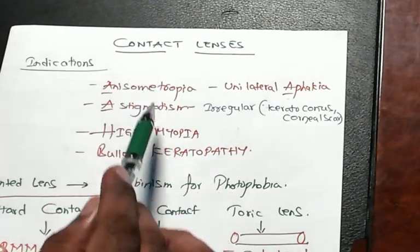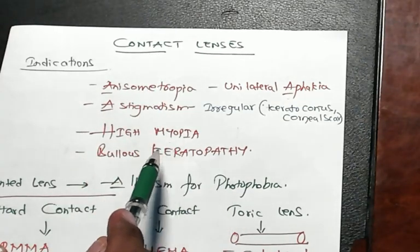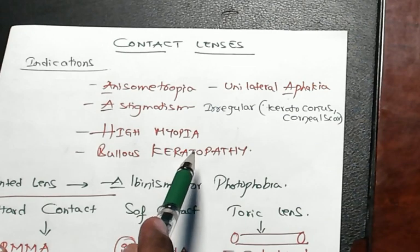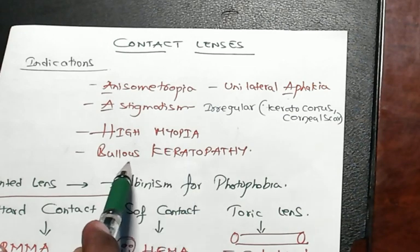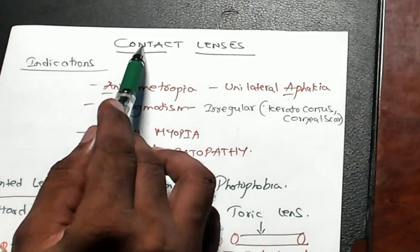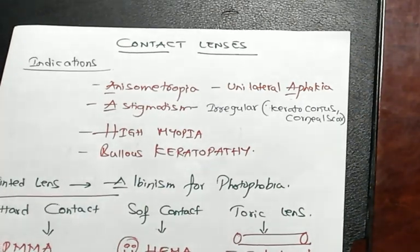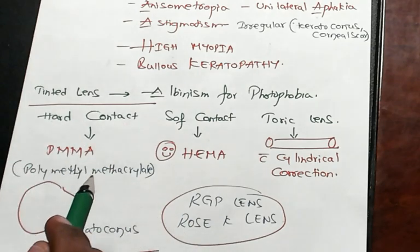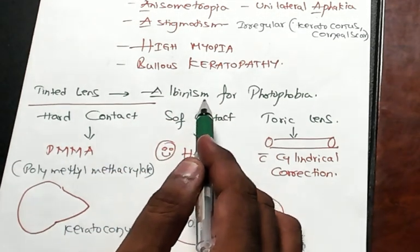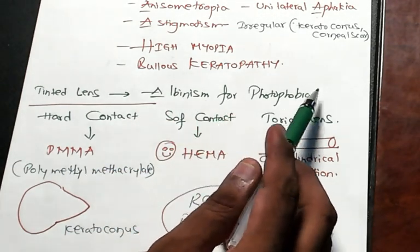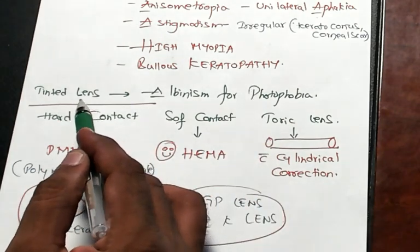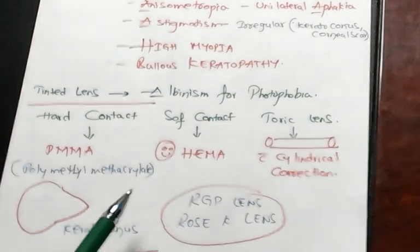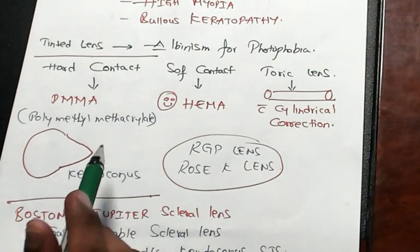Bullous keratopathy. IOL itself can cause bullous keratopathy. Anterior chamber IOL, bullous keratopathy, contact lens is the one which is preferred. Then where will you use tinted lens doctor? Tinted lens, albinism, in order to prevent photophobia. You tint the lens, make it dark, tinted lens.